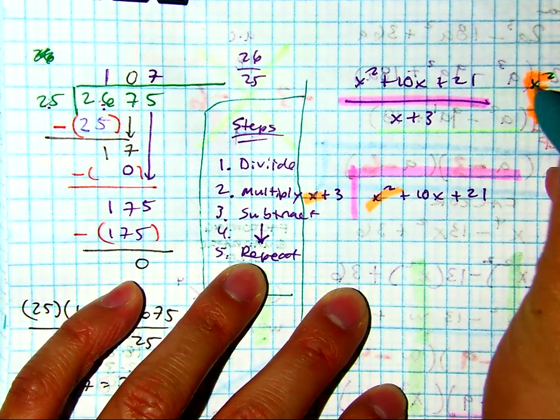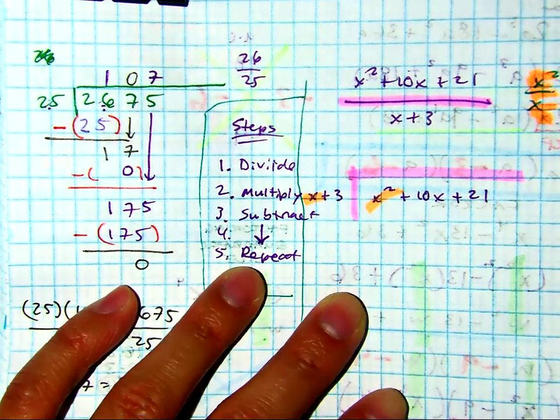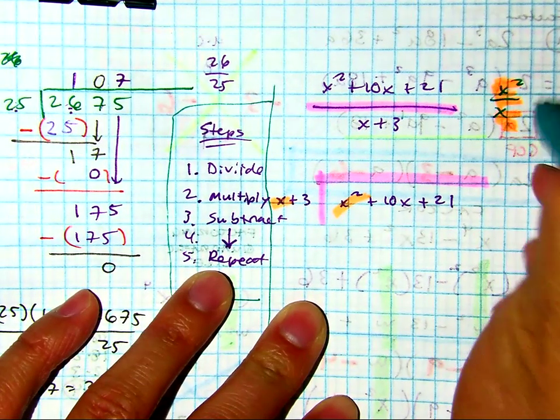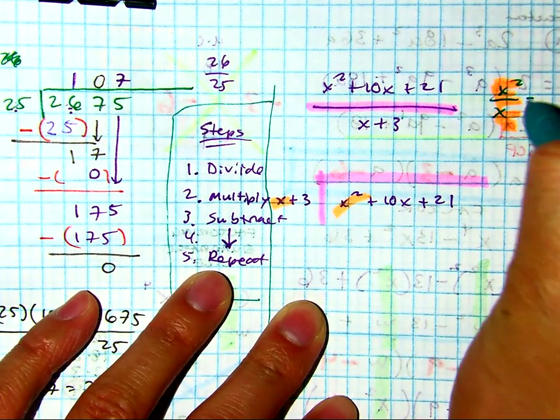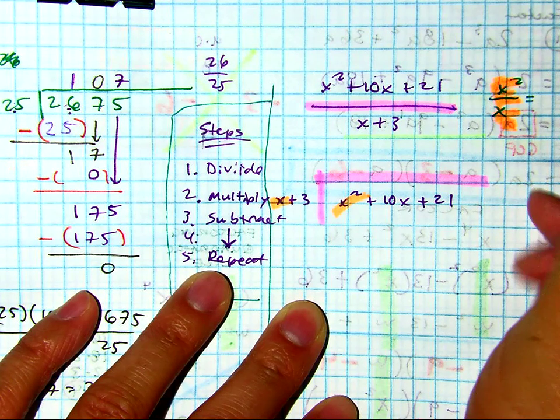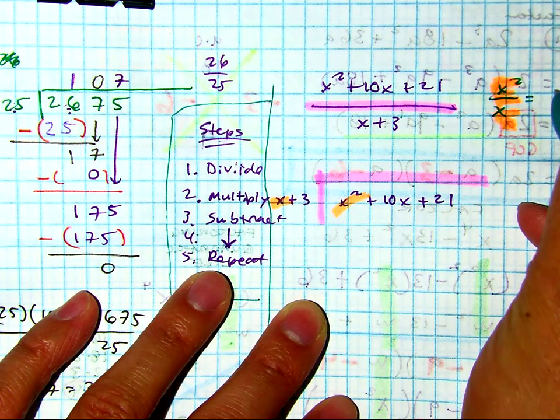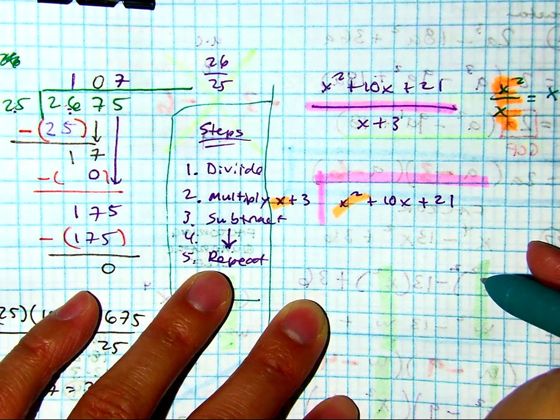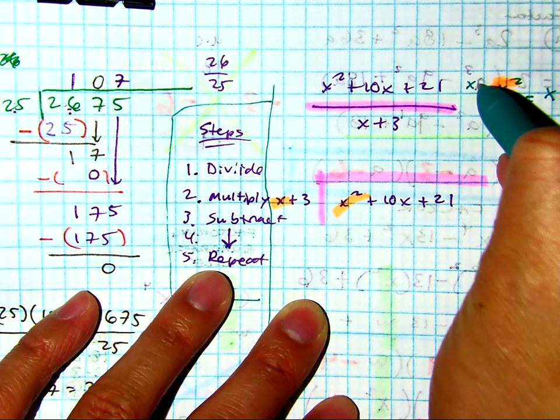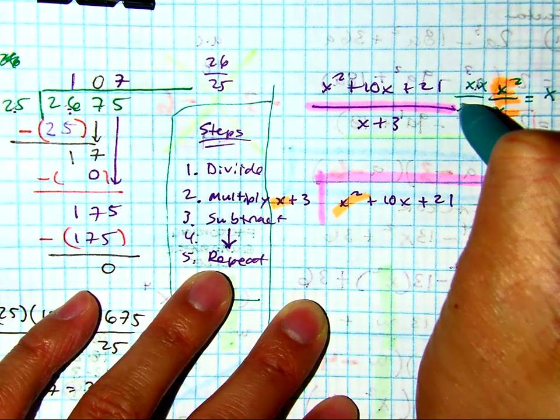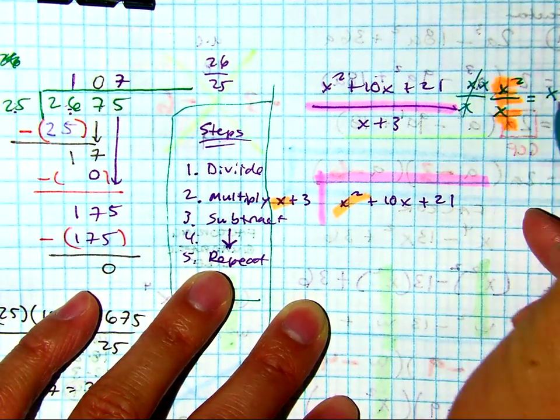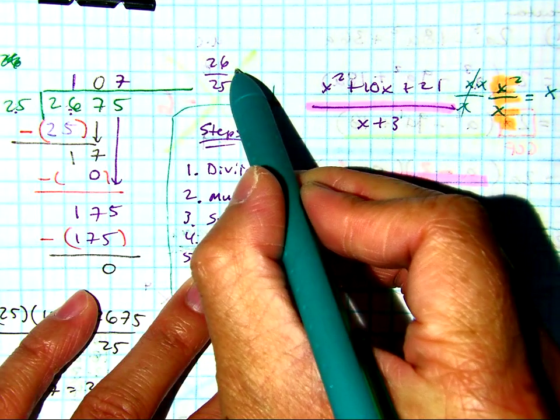x squared divided by x. How many times does x go into x squared? It goes in x times. How do I know that? x times x over x, and you just cancel this out. Essentially, that's what you're doing over here.